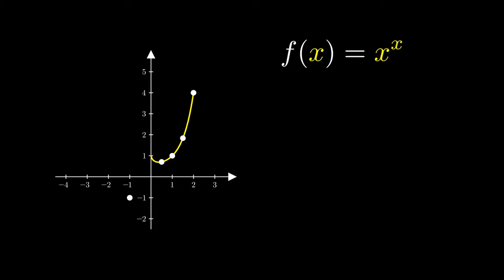What about negative 2 raised to the negative 2? Well, that just equals 1 divided by negative 2 raised to the 2. This simplifies to 1 divided by 2 squared, which equals 1 over 4. Let's plug that into our graph.